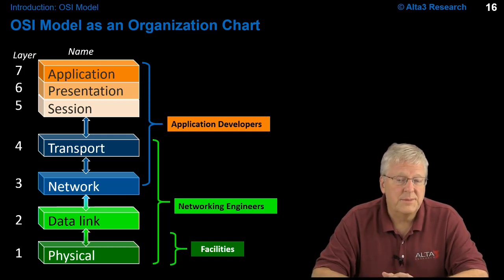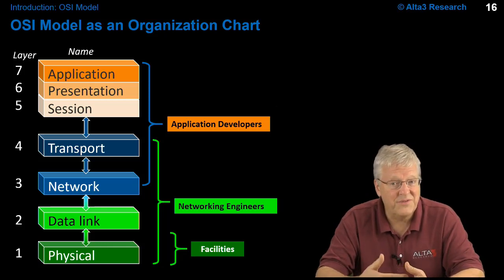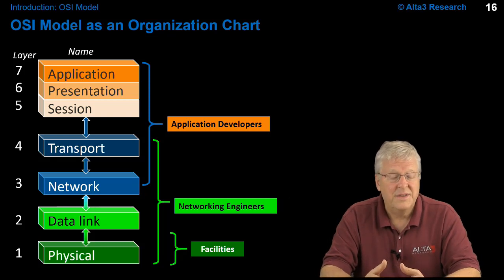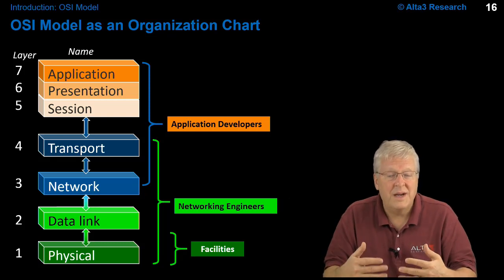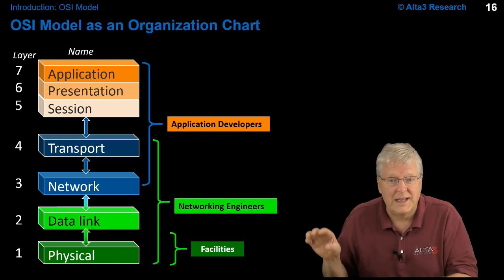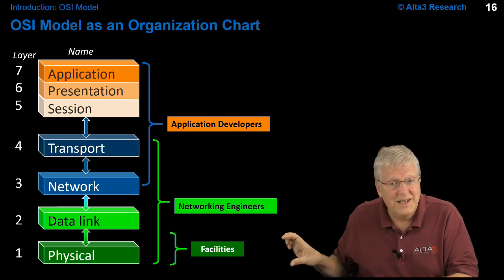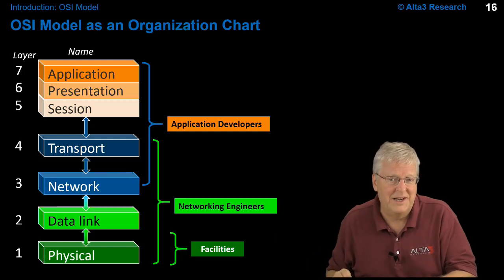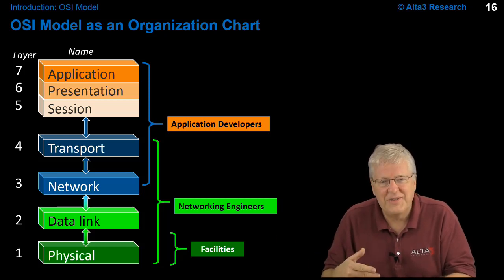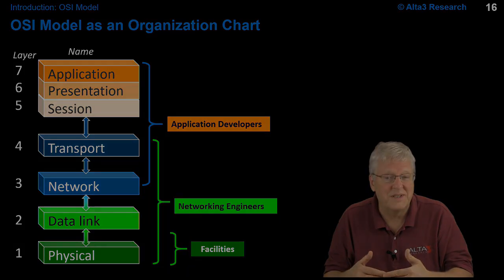Facilities people are a different branch with a different skill set — they are concerned with the physical facilities themselves, handling the actual transport of the bits. Interestingly, bits per second doesn't even apply until you get all the way down to layer 1. That's the layer that ultimately manifests in bits per second.